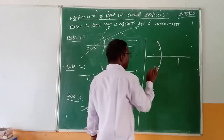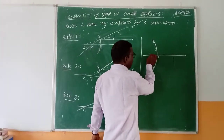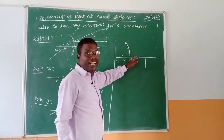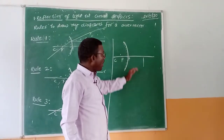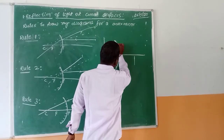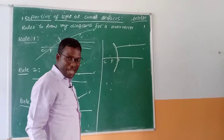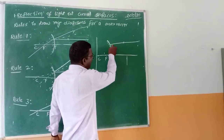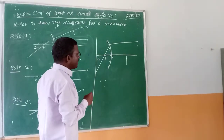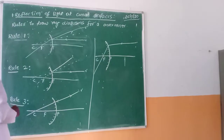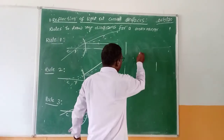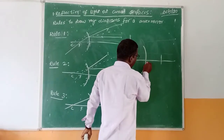Now I am going to draw a ray diagram showing how to draw a real object. I am going to draw a convex mirror. Imagine the pole, focus, and center of curvature. Let us imagine that an object is placed at some point above the principal axis. From that object, a light ray will travel parallel to the principal axis. After getting incident on this mirror, the reflected ray will appear to pass through the focus.